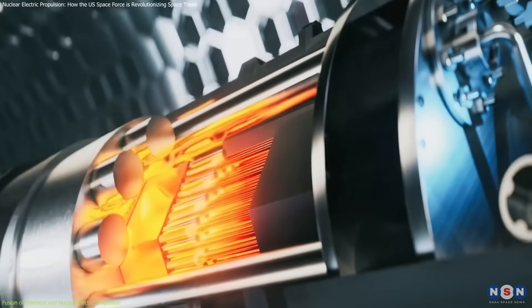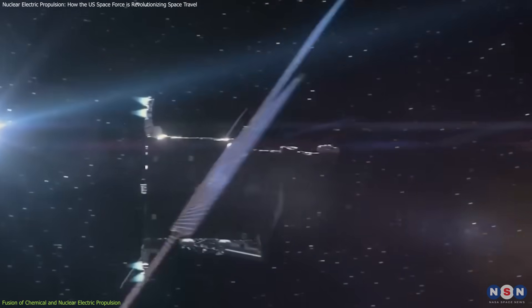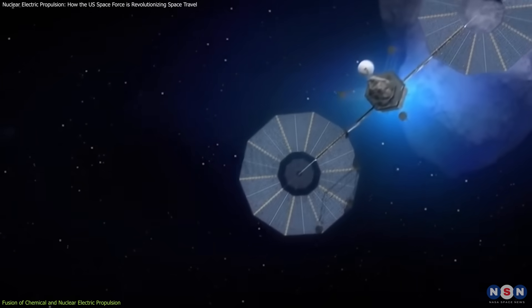This small yet powerful reactor uses nuclear fission to produce heat, which is then converted into electricity. The continuous energy flow enables the electric thrusters to operate at higher power levels, achieving greater speeds over long distances.